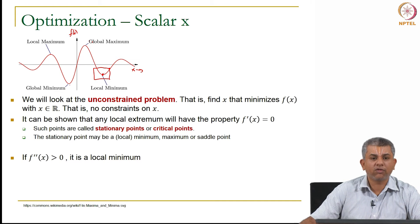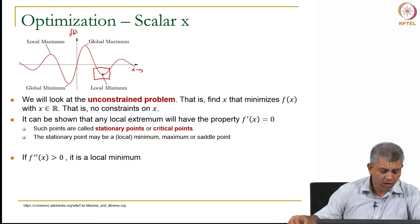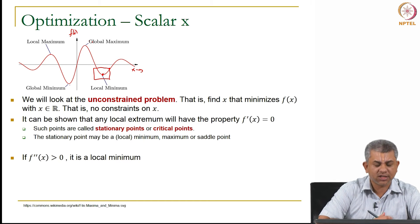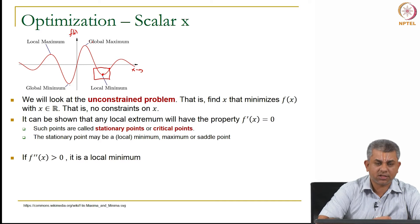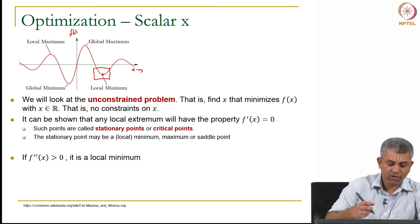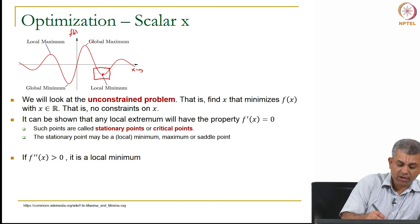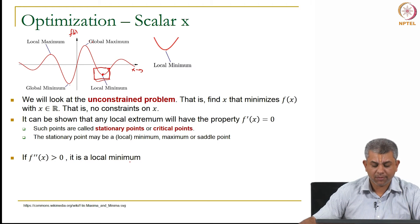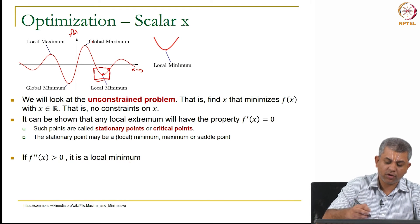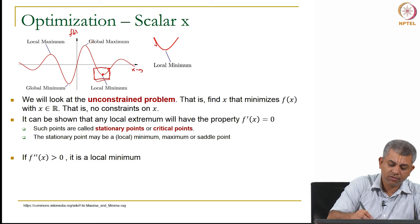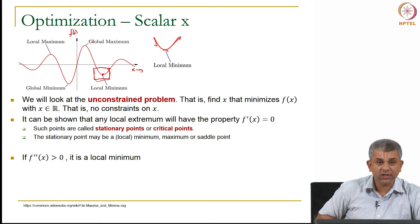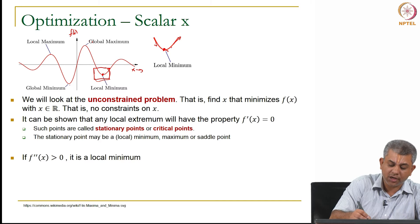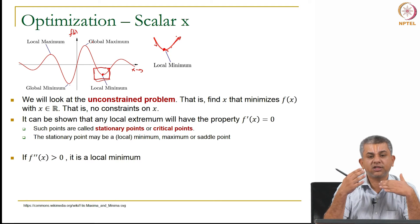Now how do we figure out whether it is a local minimum or a local maximum? Typically you look at the second and higher derivatives. We will look at just the second derivative case here. So if f double prime x, if the second derivative is positive, for example here, in such a case it is a local minimum. For example if you look at the slope here, you will see that the slope of the slope, so as I move away from here, the slope increases which means that it is a minimum here.